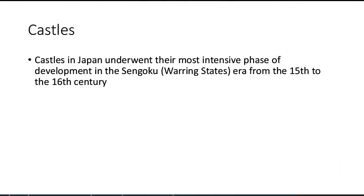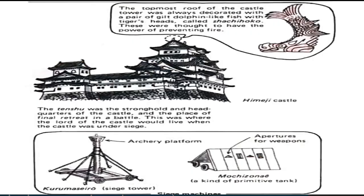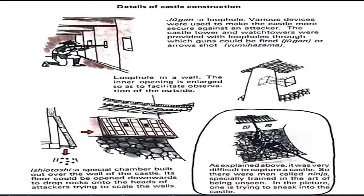Castles in Japan underwent their most intensive phase of development in the Sengoku warring states era from the 15th to 16th century. The Tenshu castle tower was protected by fortified courts called the Honmaru, Ninomaru, and Sannomaru — meaning the main court, second court, and third court. This is an example of their fortified castle used in wars.